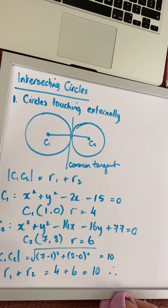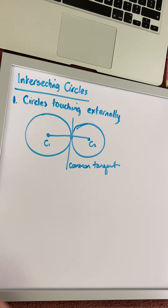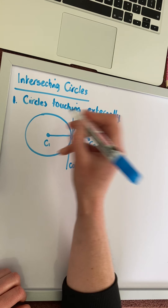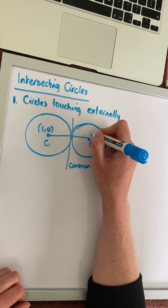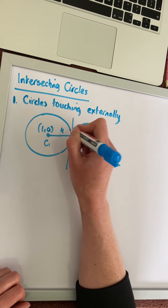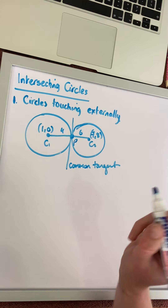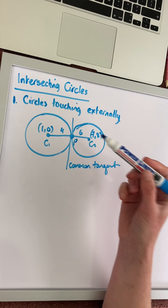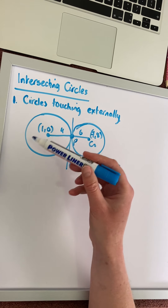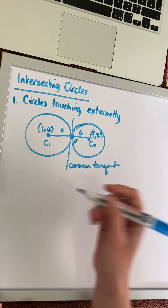To find the equation of the tangent, we need two things: the slope of the line and a point on the line. We have center 1 at point 1, 0 and center 2 at point 7, 8. They touch externally with radius 4 and radius 6. To find the point of contact, point P, we can use the point dividing a line segment in a given ratio formula, or translations. I'm going to use translations because it's a little bit quicker. We're looking at an internal division.